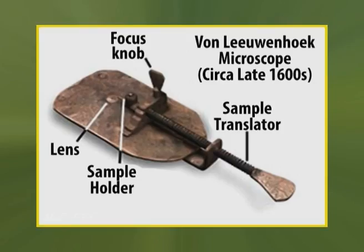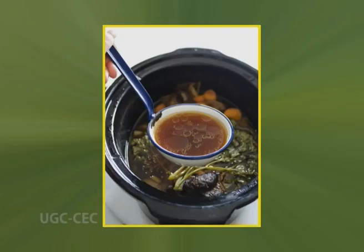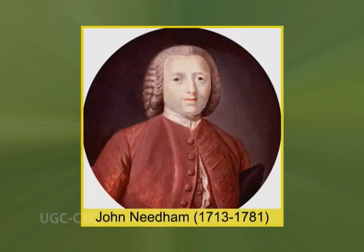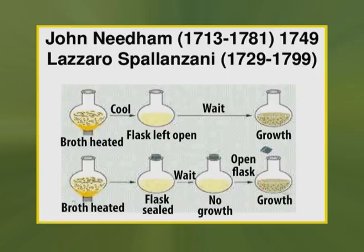After van Leeuwenhoek died, the study of microbiology did not develop rapidly because microscopes were rare and interest in microorganisms was not high. Scientists debated the theory of spontaneous generation, which stated that microorganisms arise from lifeless matter such as beef broth. This theory was disputed by Francesco Redi, who showed that fly maggots do not arise from decaying meat if the meat is covered. John Needham advanced spontaneous generation, but Lazaro Spallanzani disputed the theory by showing that boiled broth would not give rise to microscopic forms of life.